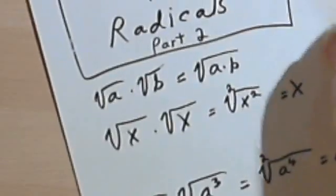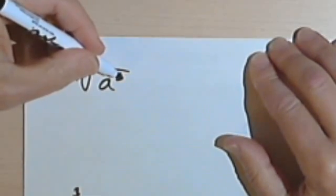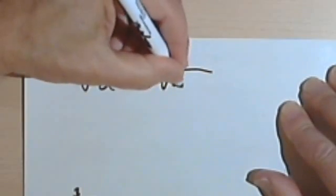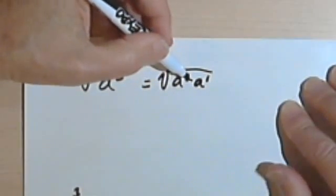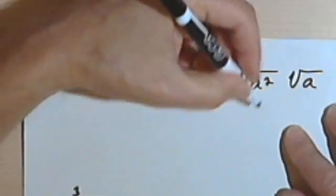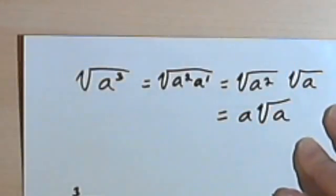Let's look at something a little more complicated. Let's say I have the square root of a to the third. The formal way: a to the third can be thought of as a squared times a to the first. Since a squared is a perfect square, I can take that out, giving me the square root of a squared times the square root of a. The square root of a squared — dividing 2 into the exponent — gives me a, so this whole thing becomes a times the square root of a.